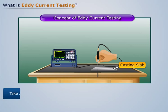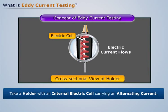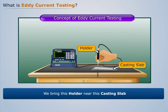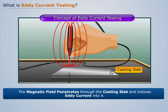Take a holder with an internal electric coil carrying an alternating current. We see that an alternating current in the coil generates an alternating magnetic field. Now as we bring this holder near this casting slab, we see that the magnetic field penetrates through the casting slab and induces Eddy current into it.